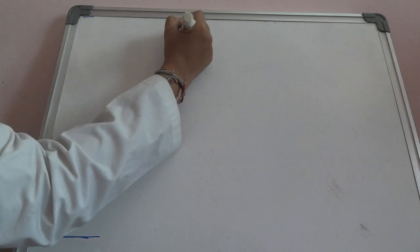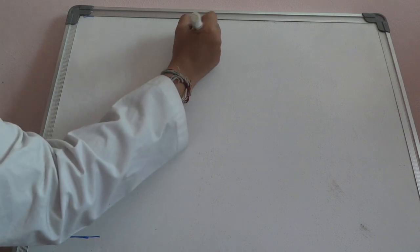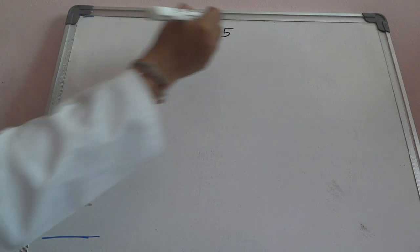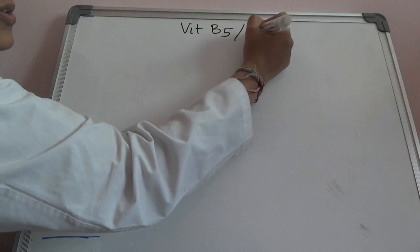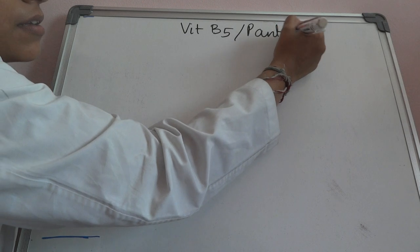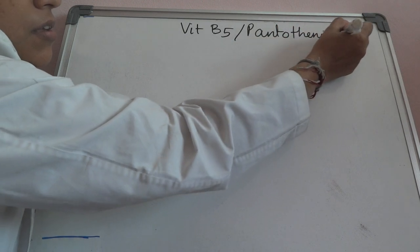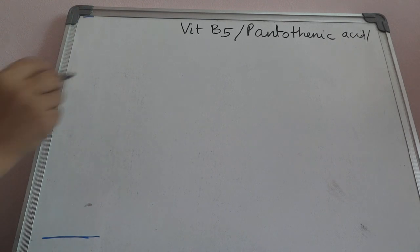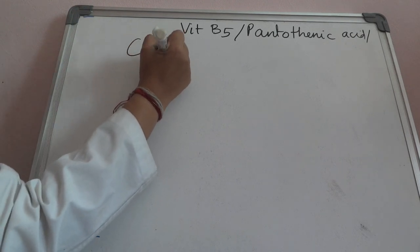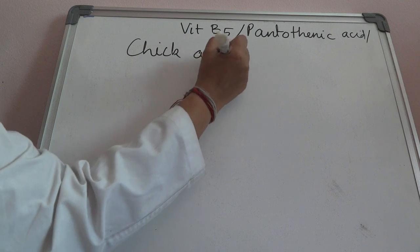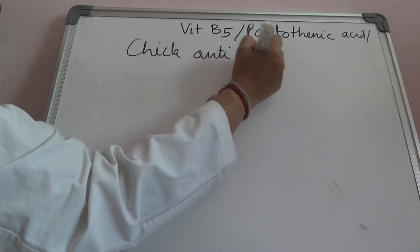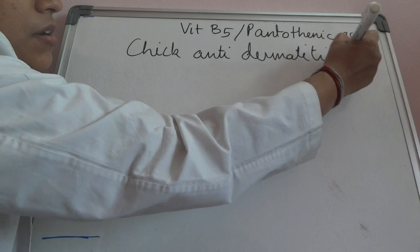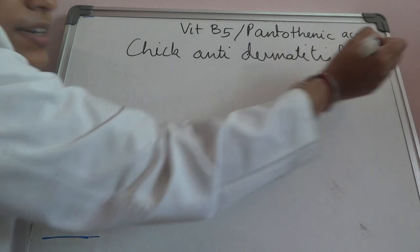Hi everybody. Today we discuss vitamin B5 first. Vitamin B5 is also called pantothenic acid. Previously it was also called chick anti-dermatitis factor. It has one more name: filtrate factor.